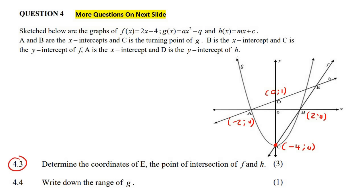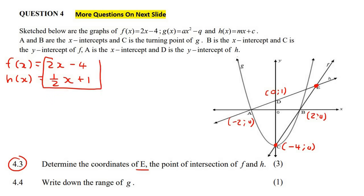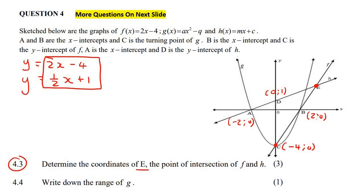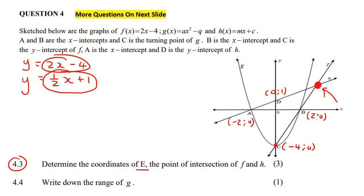This question says determine the coordinates of E, which is the intersection of F and H. F's equation is two X minus four, and H's equation is a half X plus one, which we just worked out. To find the place where two lines intersect, you make these two parts equal to each other. The reason is that both sides represent a Y value, and when the lines are intersecting, the Y value at that point is exactly the same.